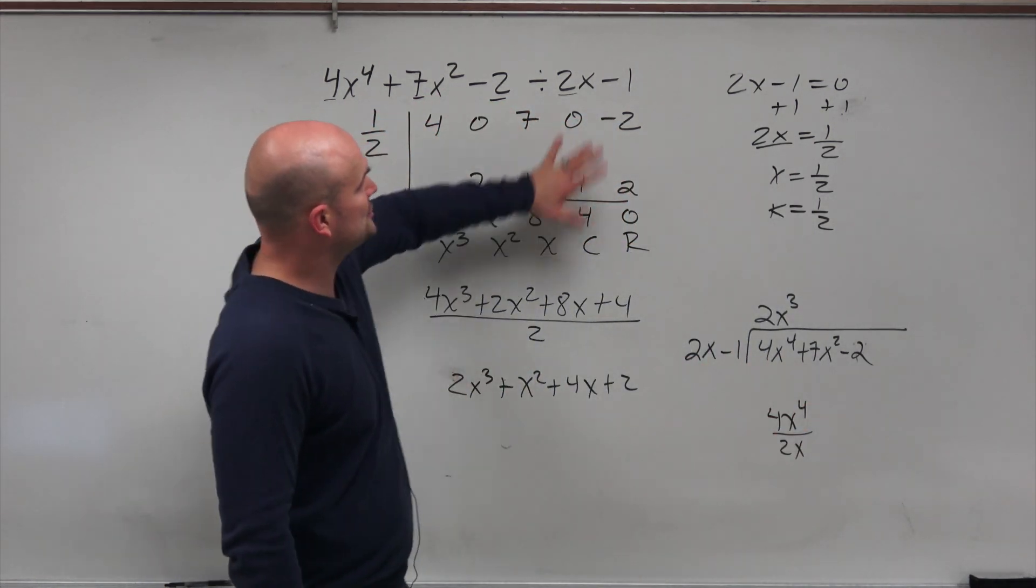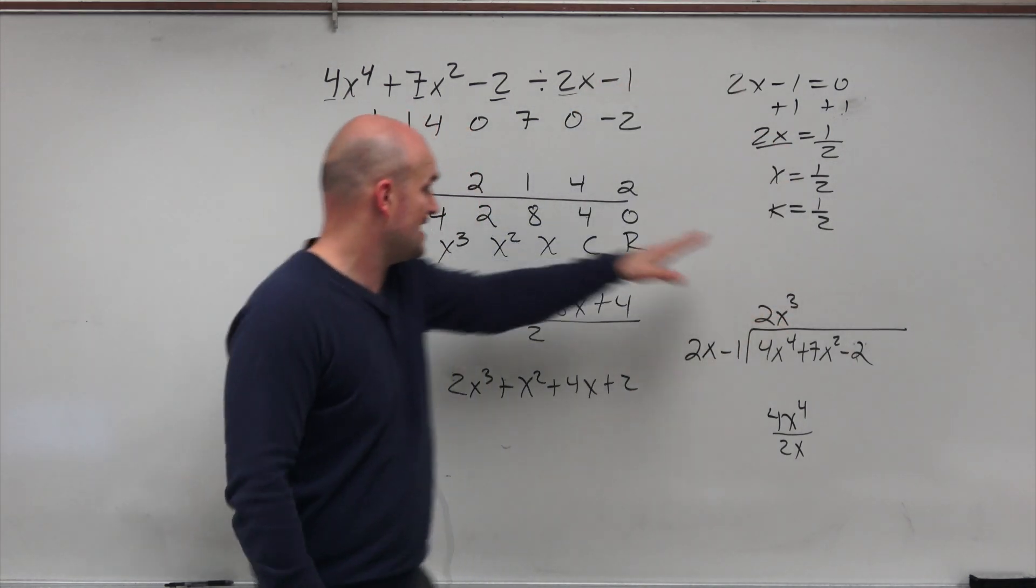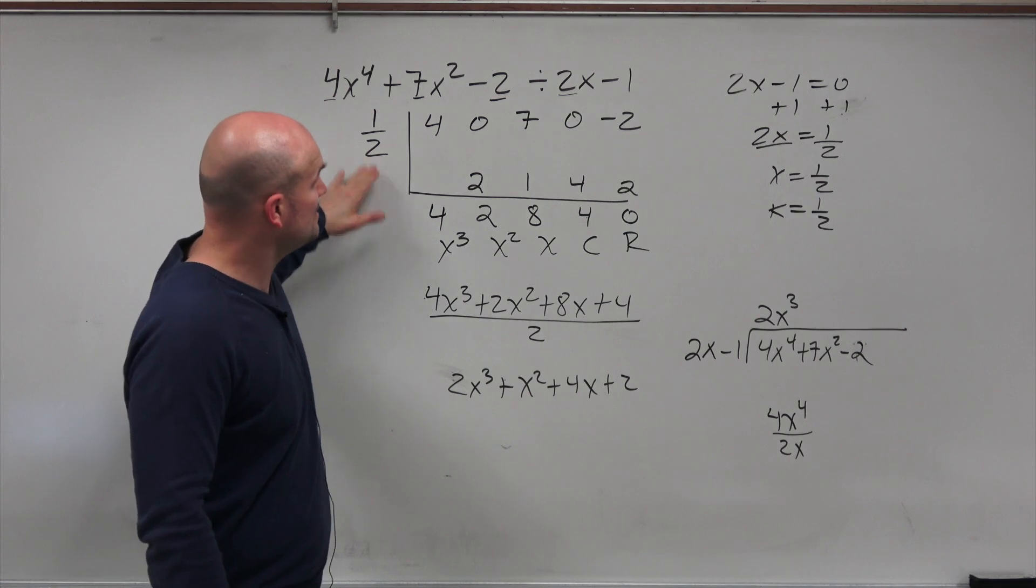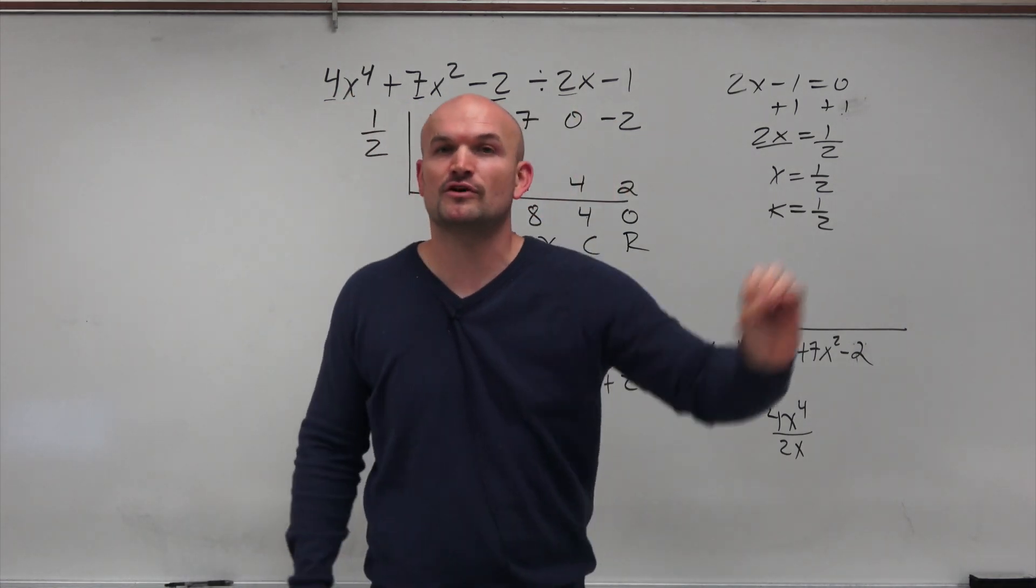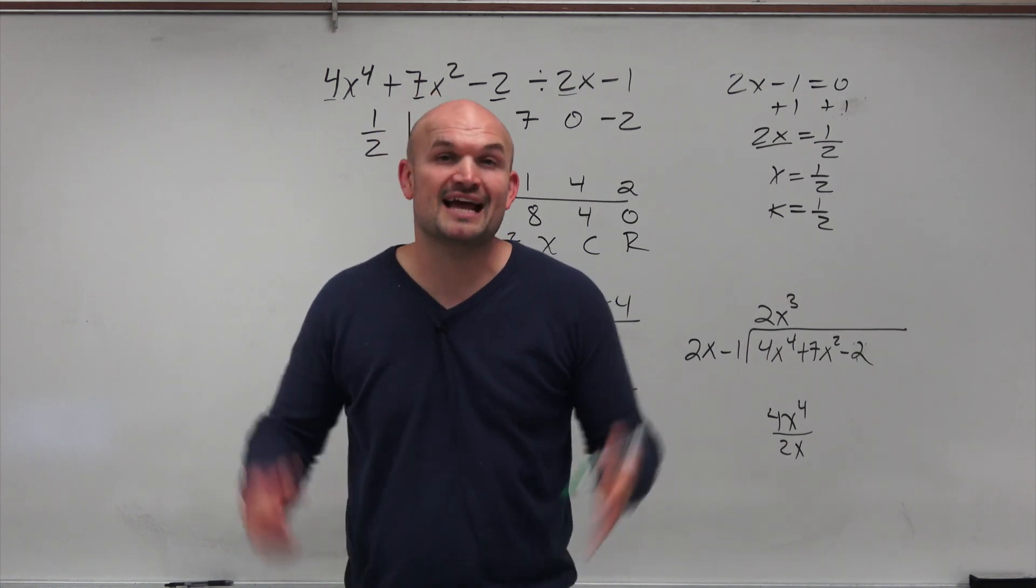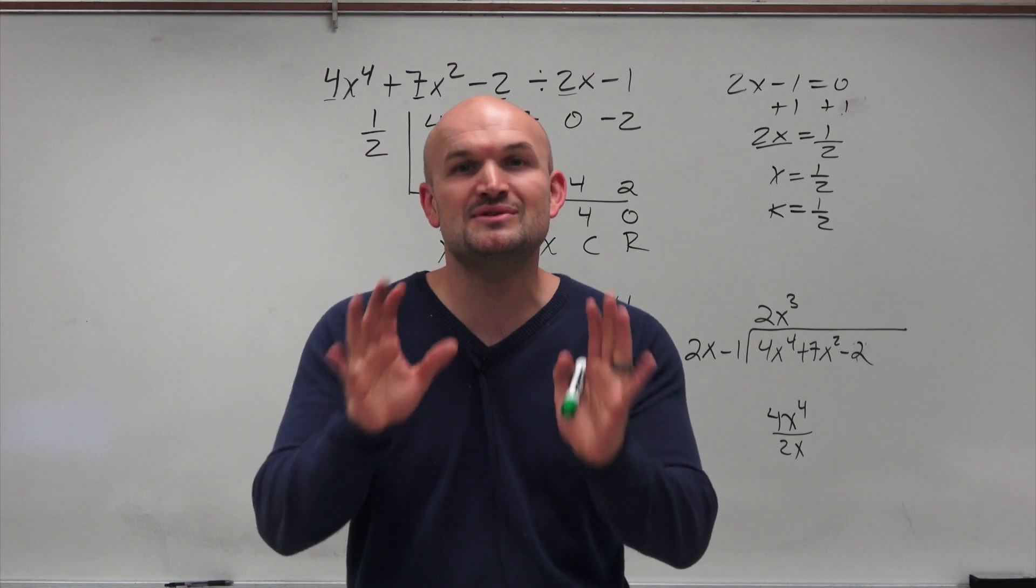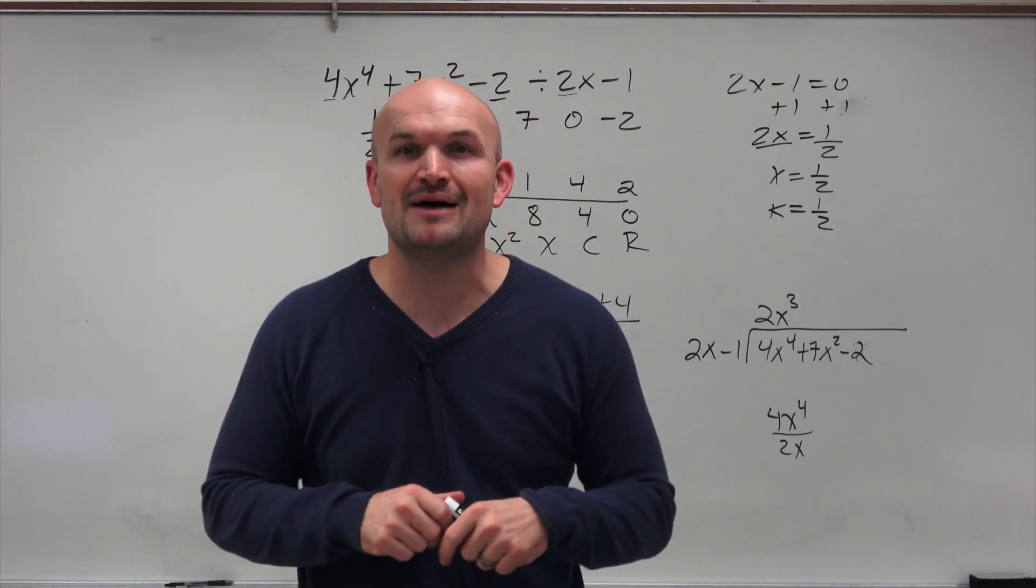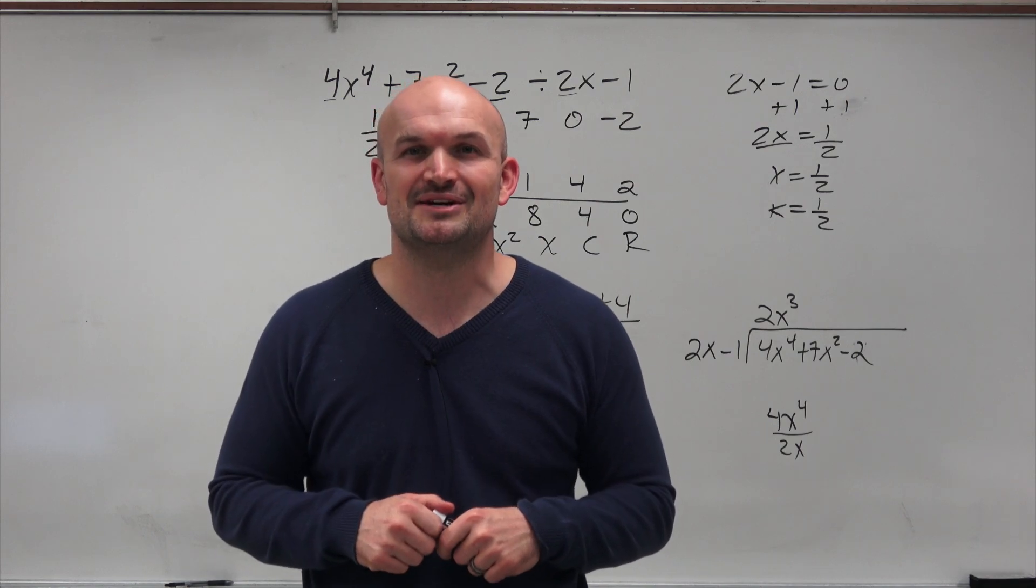From the setup, make sure you take your divisor, set it equal to 0 to find your value k. That is what you're going to use for division. Make sure you're using your coefficients, as well as using 0s for your place values. So there you go, ladies and gentlemen. I have plenty of more examples of showing you how to use synthetic division. I hope you go and check them out in my videos down below. Otherwise, I look forward to seeing you in the next video. Cheers.